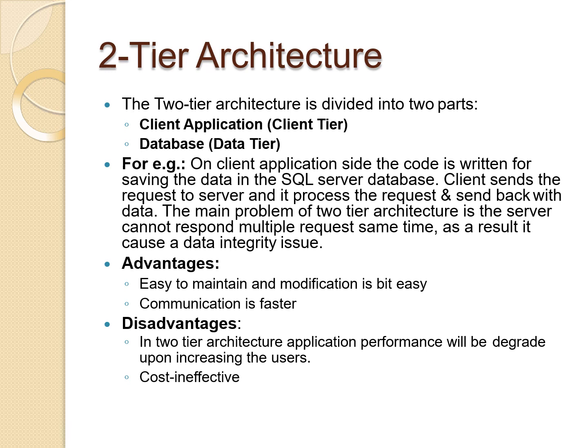Disadvantages: in two-tier architecture, the application performance will degrade upon increasing the number of users. The more users there are, the lower the performance. If there are multiple computers or users, performance decreases — that is the main drawback of two-tier architecture.